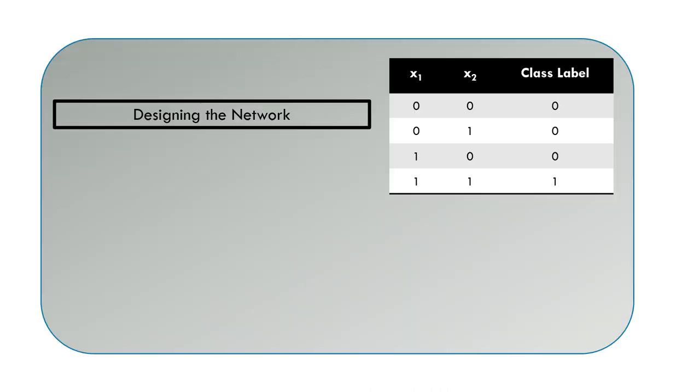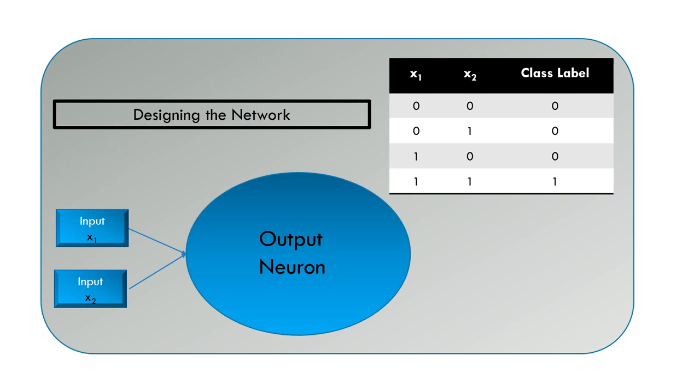McCulloch and Pitts were the first to give a successful model of the biological neuron. They visualized the input as the values of the features and they were given as input to another neuron which was expected to process the input and produce the desired output. The processing was performed by the output neuron.